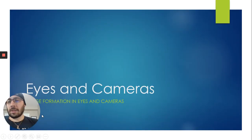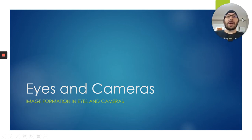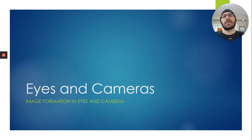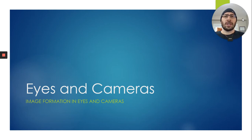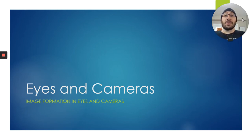We're going to be talking about eyes and cameras. Most of this can be found in topics 4.1 and 4.2, and a little bit of 4.3 when we talk about digital images. We're skipping topic three this year — it's extension material. There will be a Bill Nye video link about light and color, which I recommend, but it's optional.